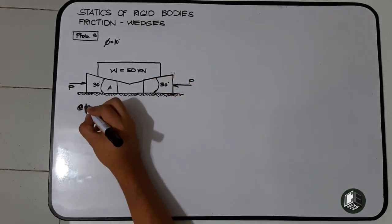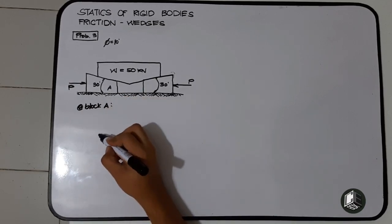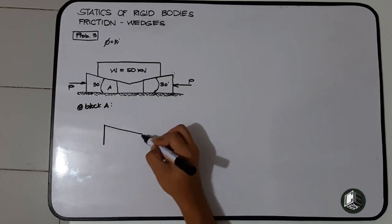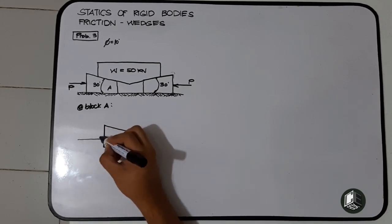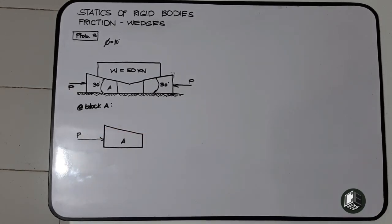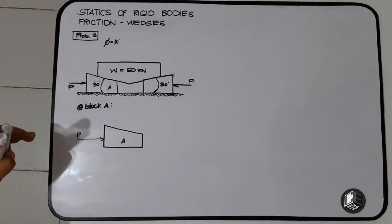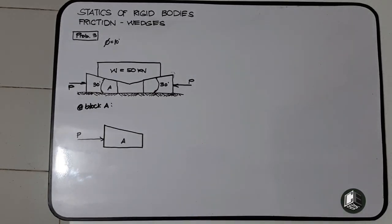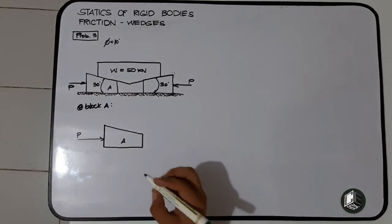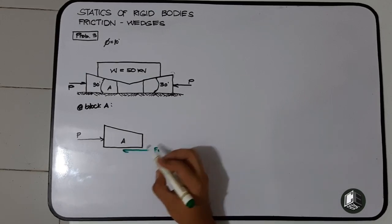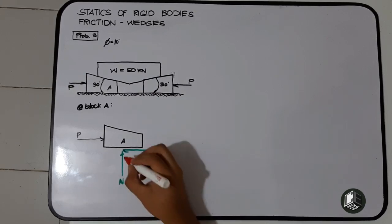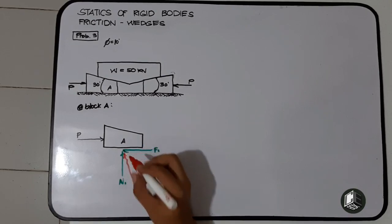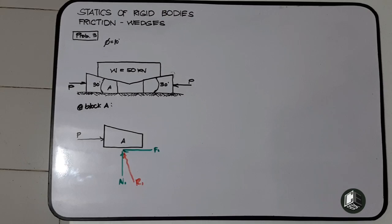So let's go to block A. This is block A and this is our force P. Since force P is pushing to the right, we need to resist it using frictional force. So we have frictional force F1 and normal force N1. The reaction R1 is at 10 degrees with N1.